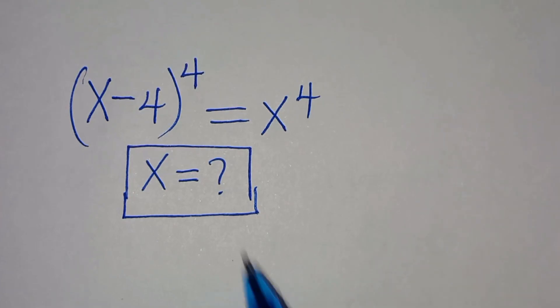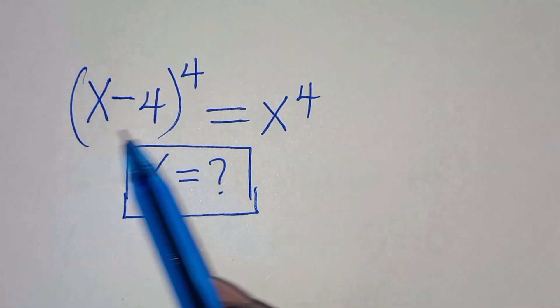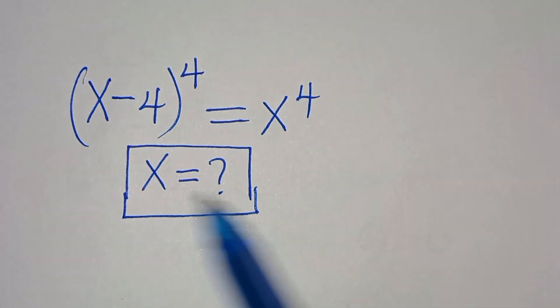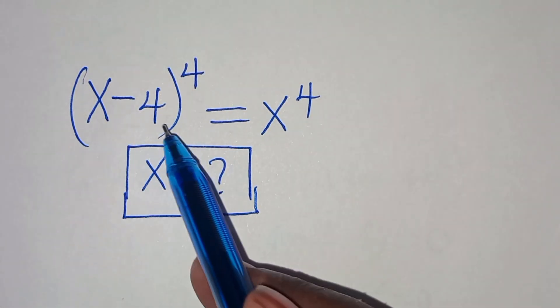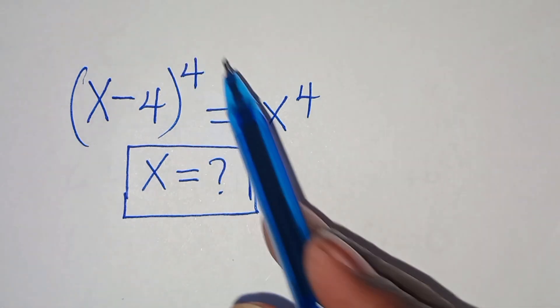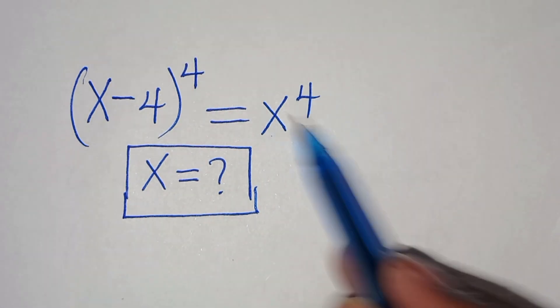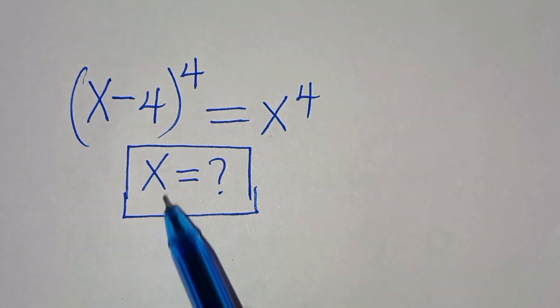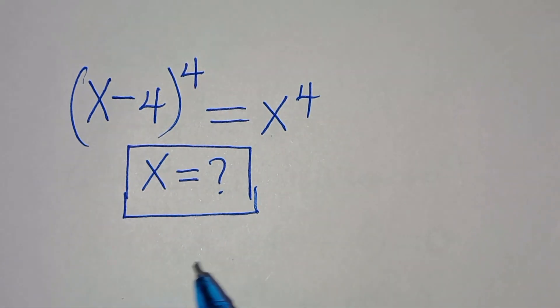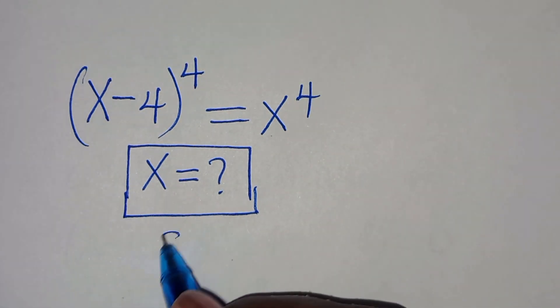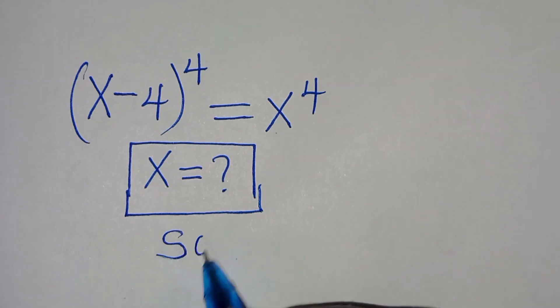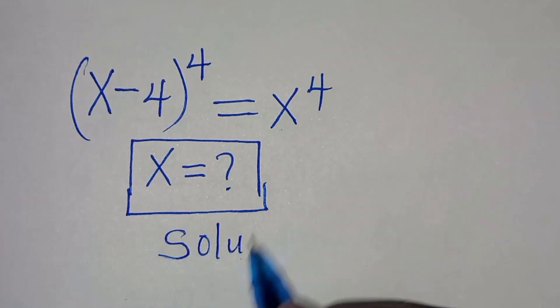Hello everyone, you're welcome to solve this nice algebra problem: (x minus 4) to the power of 4 is equal to x to the power of 4. What is the value of x? Let's provide a solution.